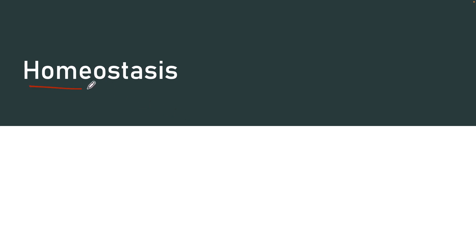So homeo means same and stasis means stable. If you take those two together, same stable, it basically means that homeostasis is what your body does to maintain a stable internal environment. This doesn't mean your body never changes. In fact, your body is always changing based on what you're doing and what the external environment or the outside is doing.